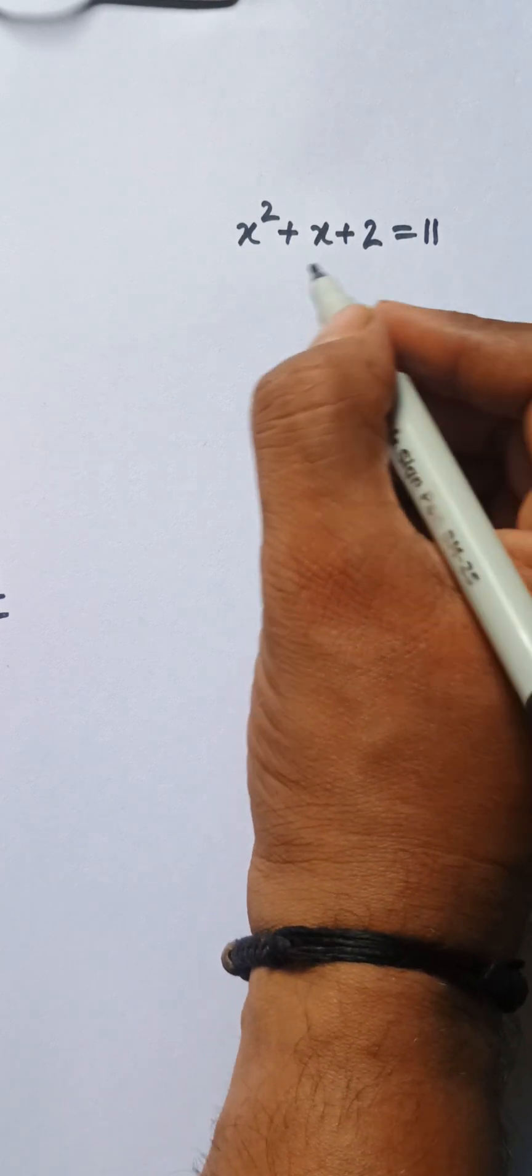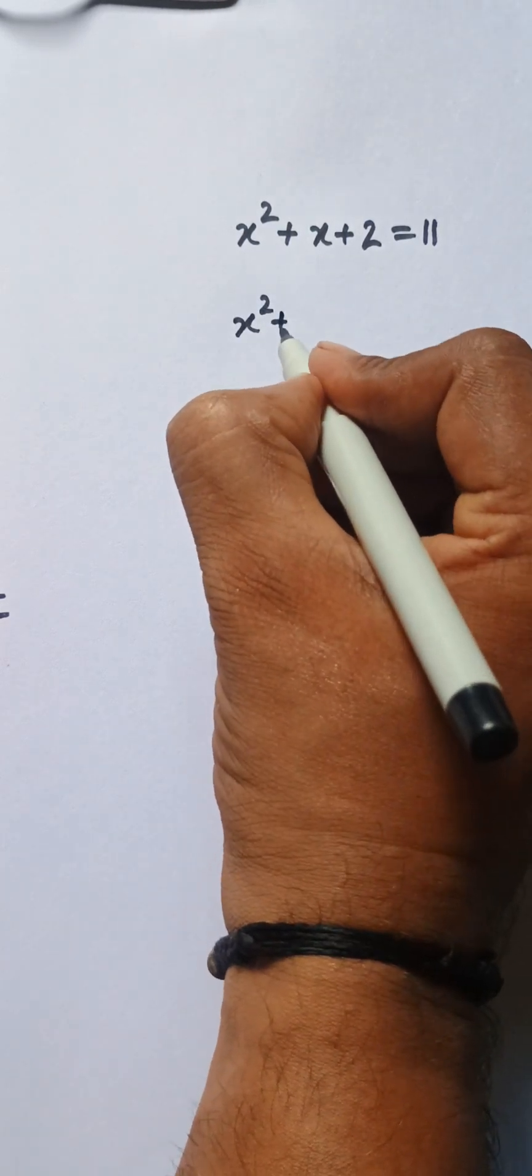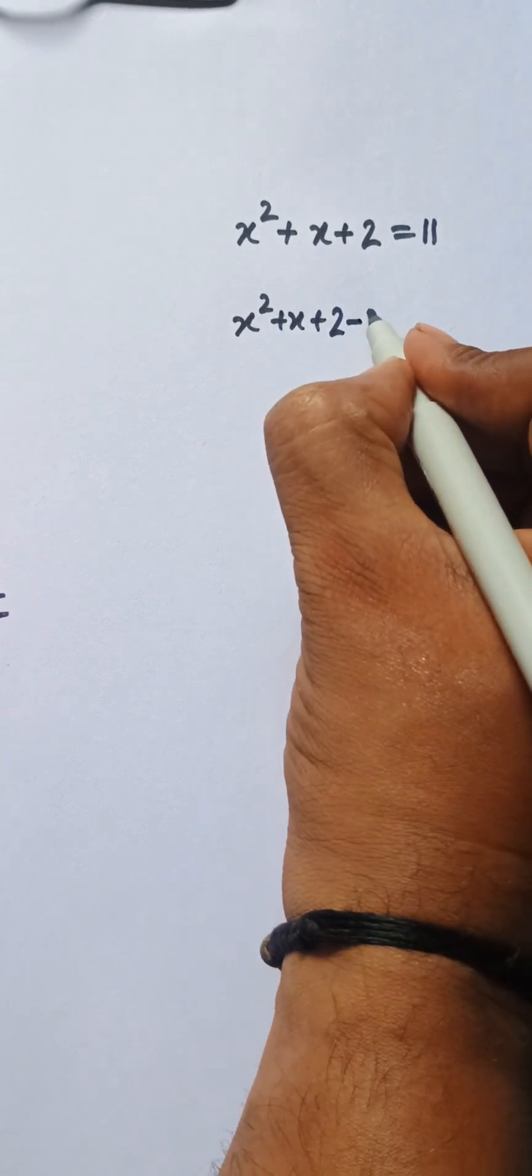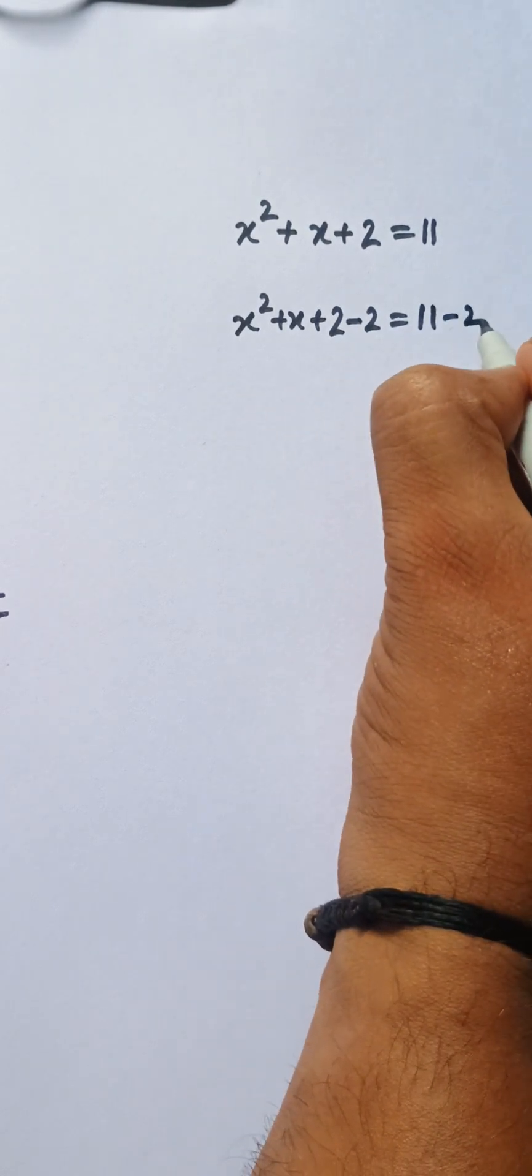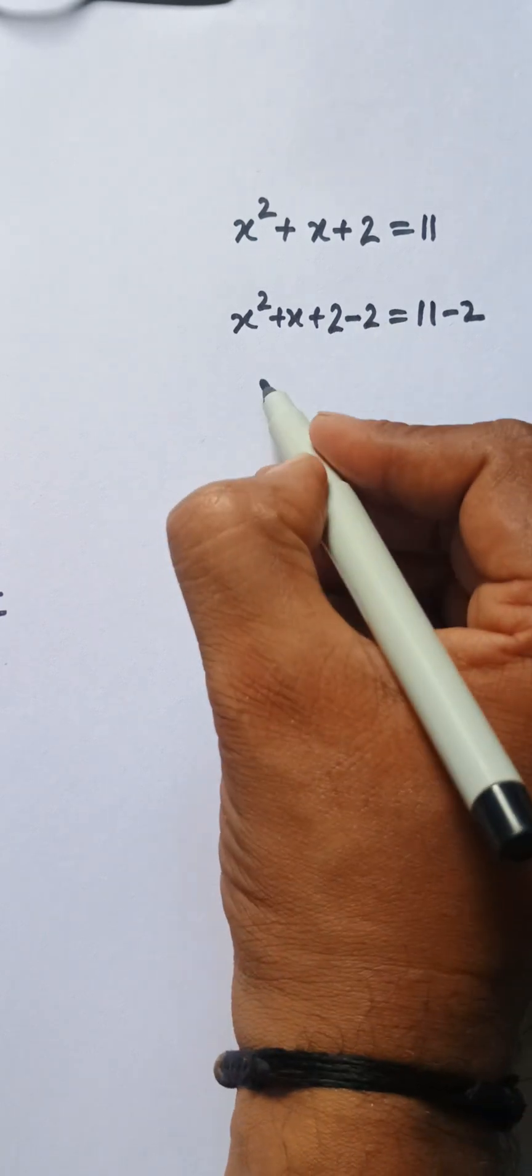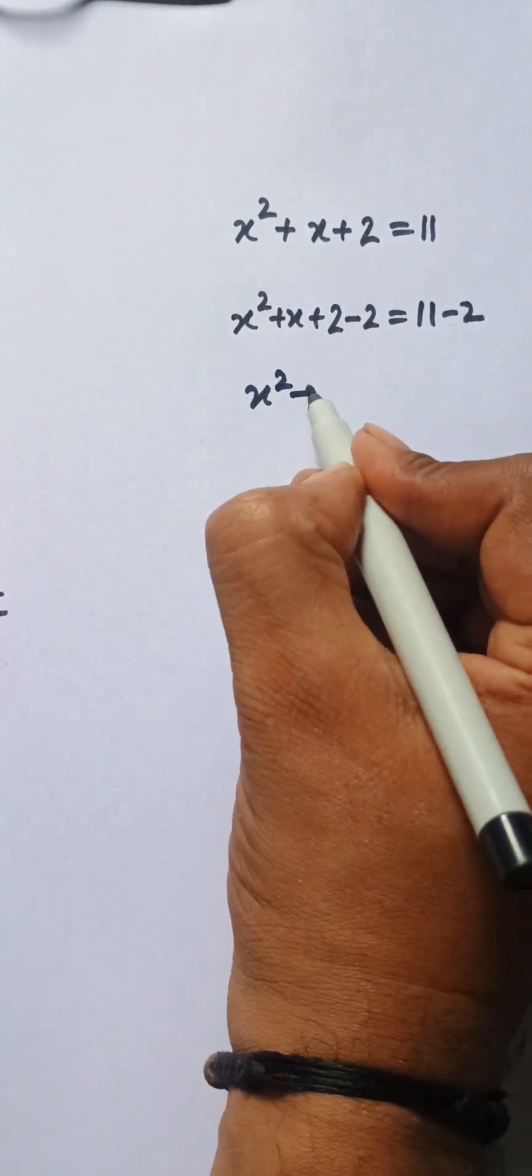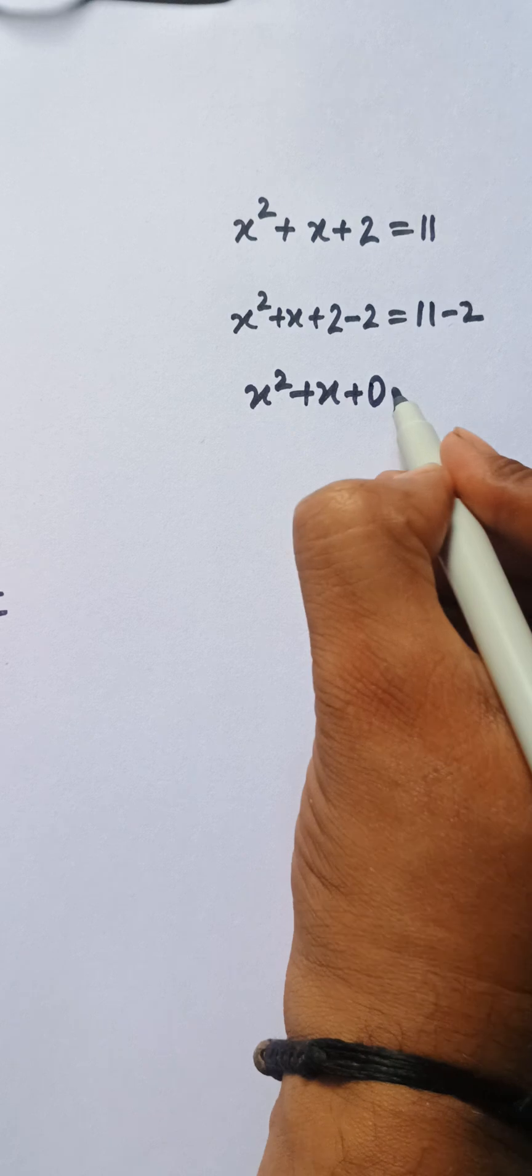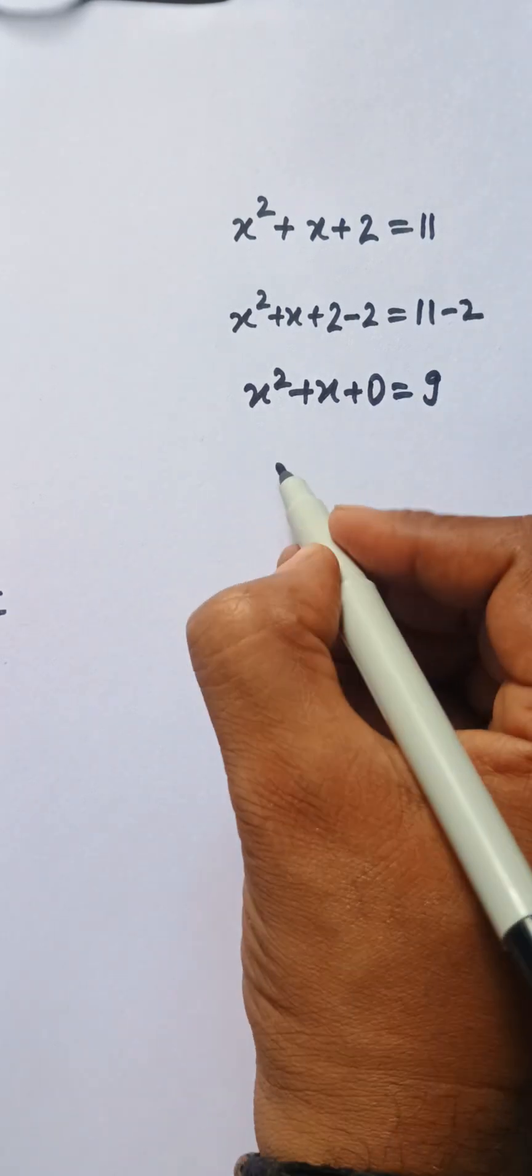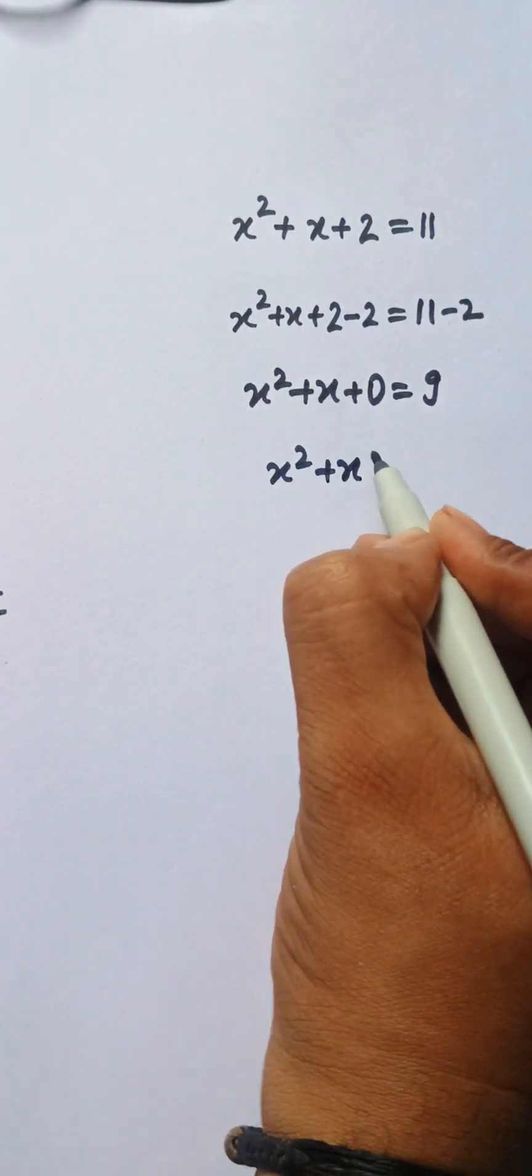So I'm subtracting 2 from the left side and also subtracting 2 from the right side. Let's do it: x squared plus x plus 2 minus 2 equals 11 minus 2. This 2 and that 2 will cancel, so x squared plus x plus 0 equals 9.